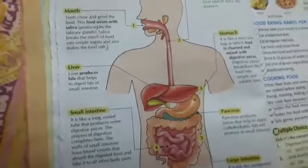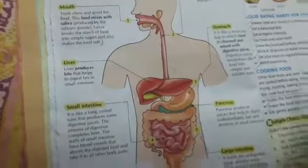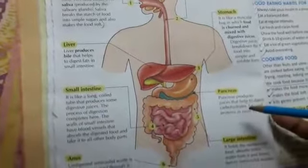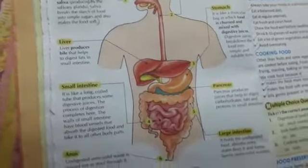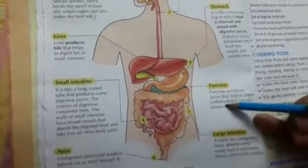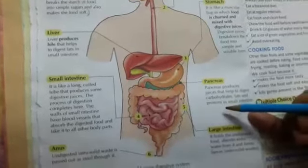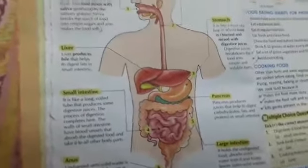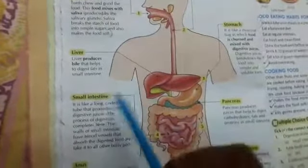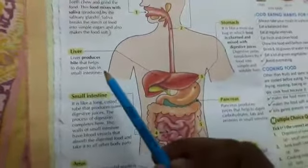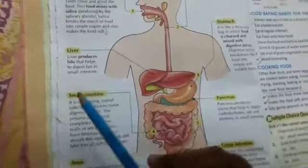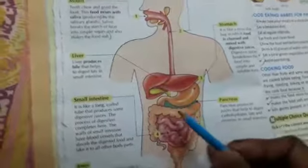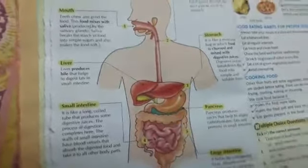Now I want to discuss two more organs. First, the pancreas: the pancreas produces juices that help to digest carbohydrates, fats, and proteins in the small intestine. Second, the liver: the liver produces bile that helps to digest fat in the small intestine. This is the liver and this is the pancreas.